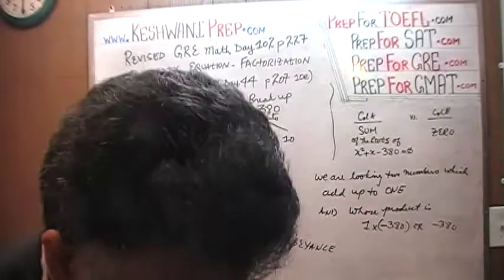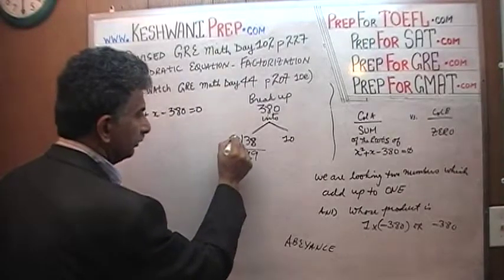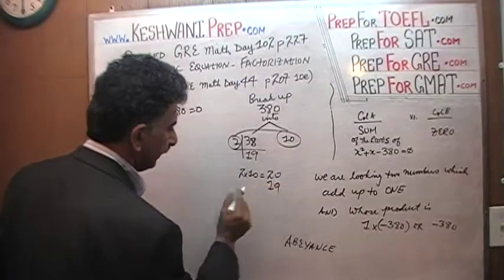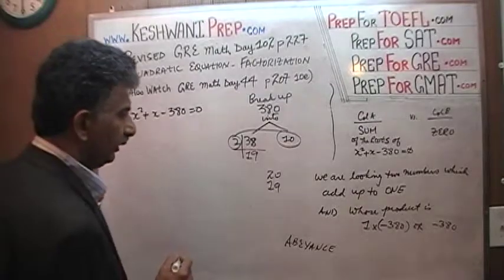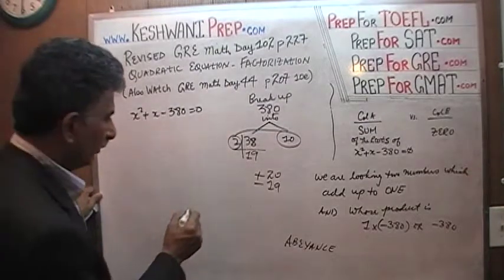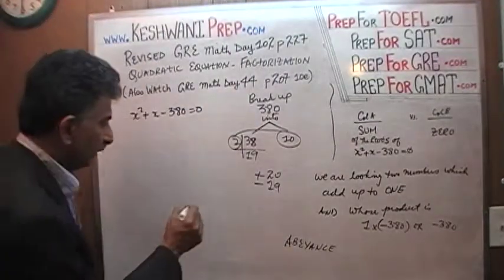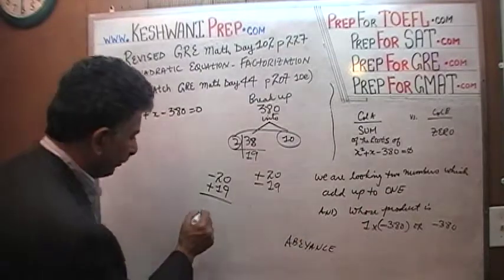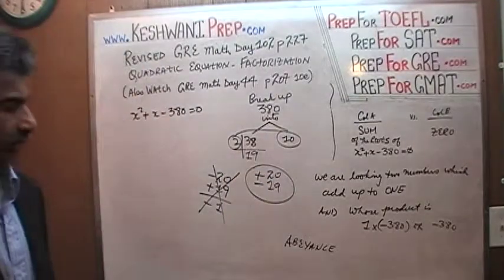So 380 = 19 × 2 × 10, which gives us 20 and 19. Now we need to make sure they add up to 1. There are two possibilities: either 20 is positive and 19 is negative, or negative 20 and positive 19. But negative 20 plus positive 19 adds up to negative 1, not 1. So that's not possible. Therefore the only possibility is positive 20 and negative 19. Those are our factors.